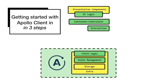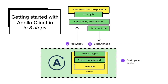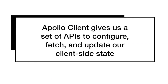There are about three steps to getting started with Apollo Client. The first step is configuring the cache — which very well may also mean connecting to a GraphQL API. Then we need to query for the data we need. And the third thing is we write mutations to change data. Apollo Client gives us a set of APIs to configure, fetch, and update our client-side state out of the box.